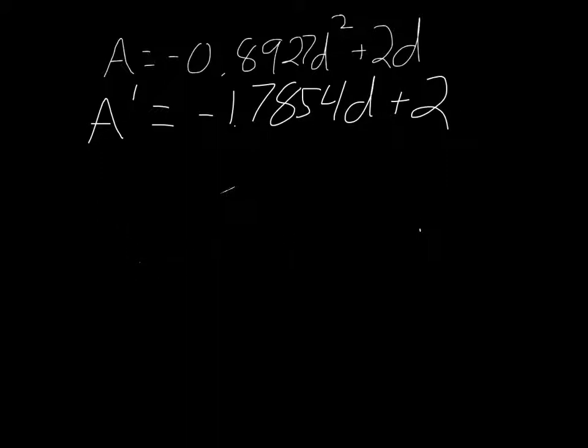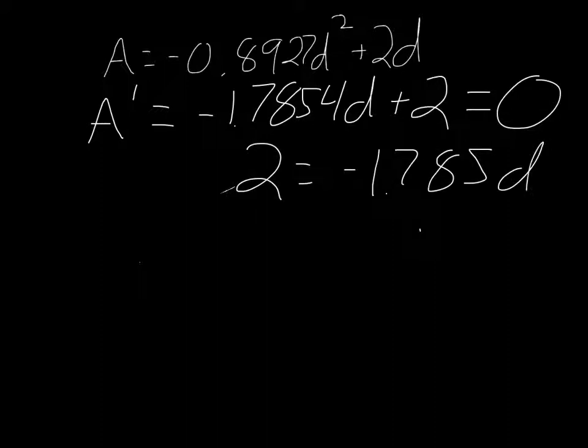So what that means is in order to find the maximum area, we need to set this derivative equal to 0. So now you can use some basic algebra. You're going to get that 2 = 1.785d, and d is simply equal to 1.12.